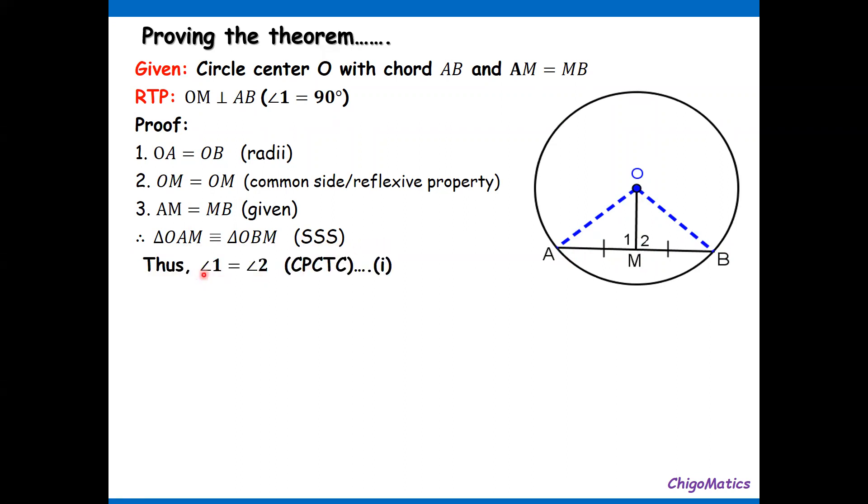Thus angle one equals angle two, corresponding parts of congruent triangles are congruent. Now we can then go to use the adjacent angles on a straight line AMB. Then it's angle one plus angle two equals 180, adjacent angles on a straight line. But we have already seen that these two angles are the same, so where there is angle two I can put angle one.